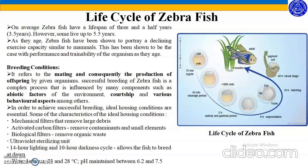These zebrafishes need some special conditions for breeding. Since the male and female are morphologically different, they can be distinguished with the naked eye. Breeding refers to the mating and consequently the production of offspring by given organisms. Successful breeding of zebrafish is a complex process influenced by many components such as abiotic factors of the environment, courtship, and various behavioral aspects. In order to achieve successful breeding, ideal housing conditions are essential.